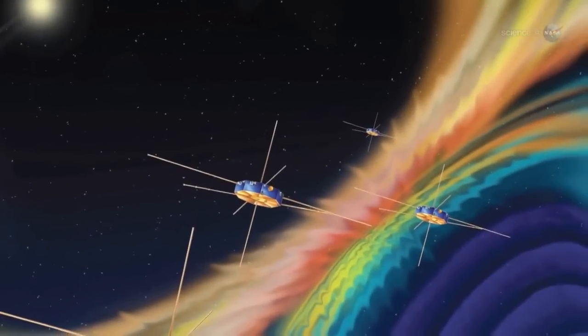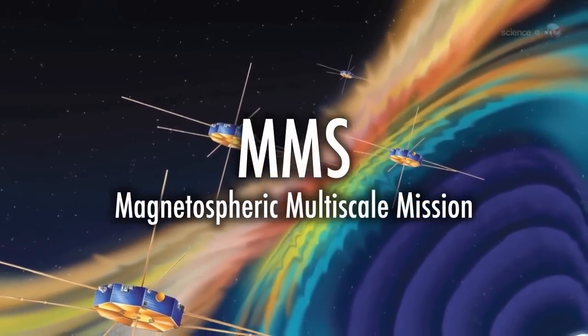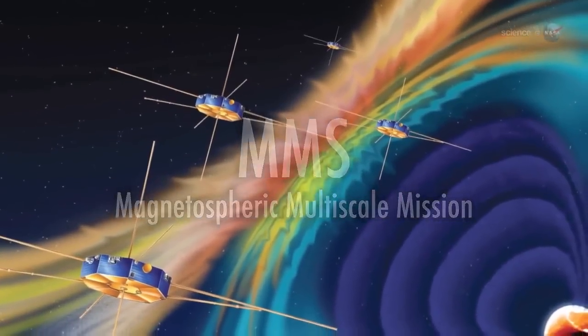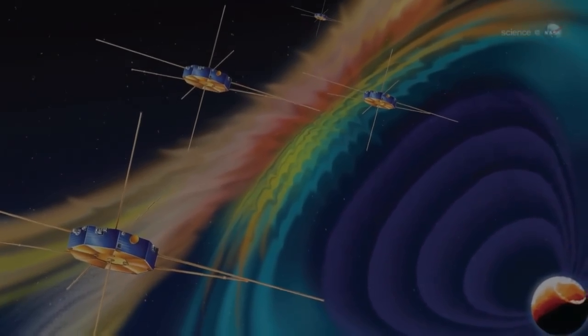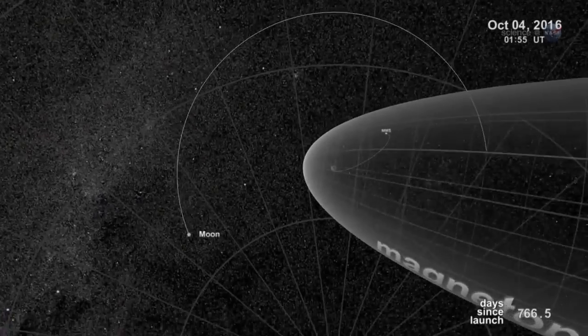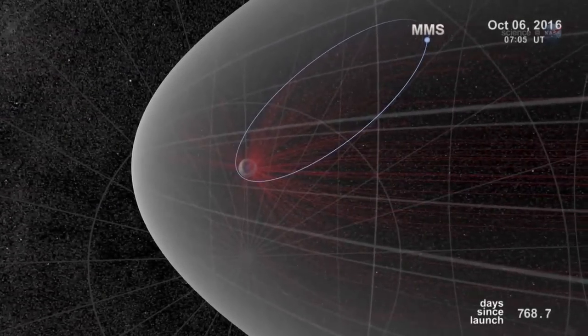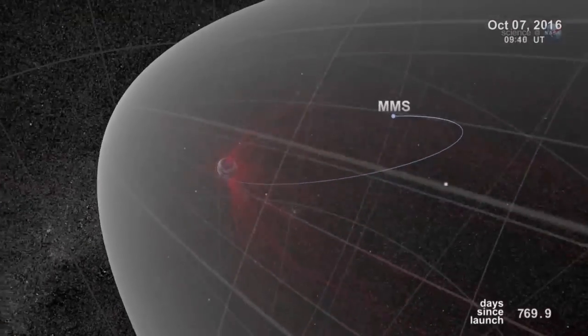NASA is planning a mission called MMS, short for Magnetospheric Multiscale Mission, due to launch in 2014, to study the phenomenon. Bristling with energetic particle detectors and magnetic sensors, the four spacecraft of MMS will spread out in Earth's magnetosphere and surround the portals to observe how they work.